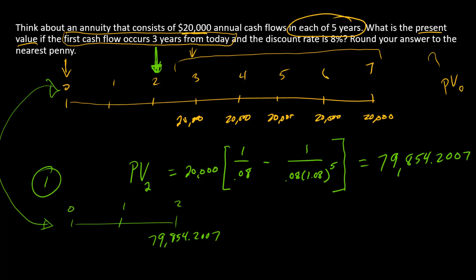Our second step is going to start with this cash flow and discount it two periods to time zero. So step two is going to be the present value at time zero equals the present value at time two discounted two periods.